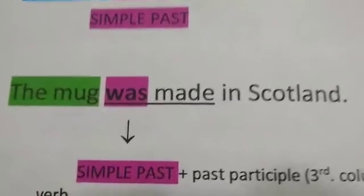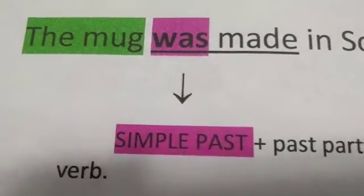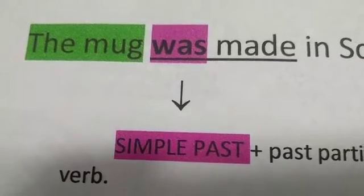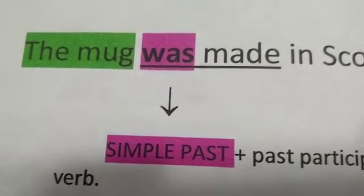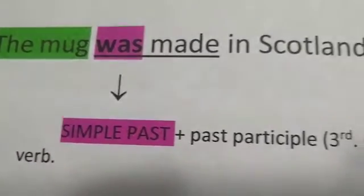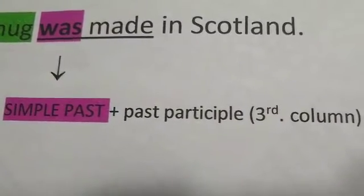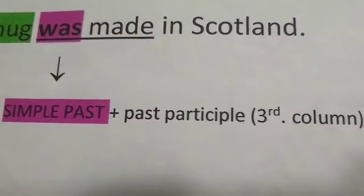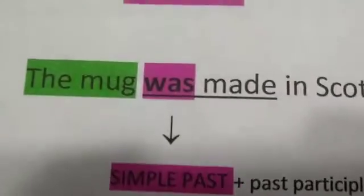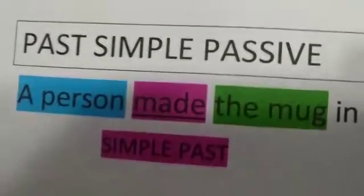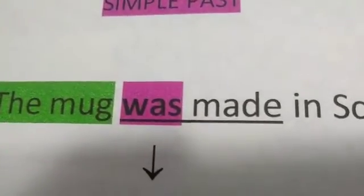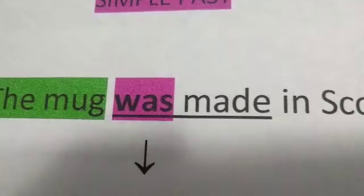In this case, the verb 'to be' is in simple past. 'Was' is the simple past form singular of the verb 'to be.' After the verb 'to be,' I use the past participle of the principal verb — we also know that as the third column. 'Made' is simple past active; 'was made' is simple past passive.